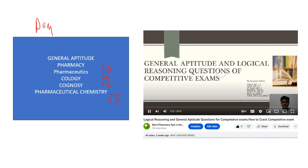Now the order has changed. Now there is general aptitude as well. So now it is 20-20-20 each. 20 from pharmaceutics, 20 from pharmacology, 20 from cognosy, 20 from chemistry and 20 from general aptitude.